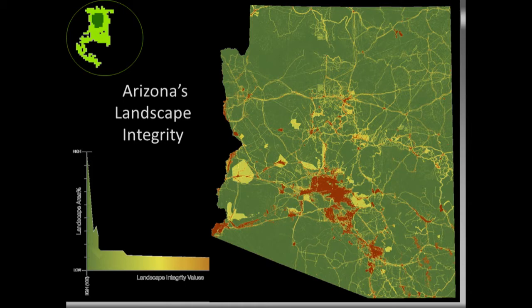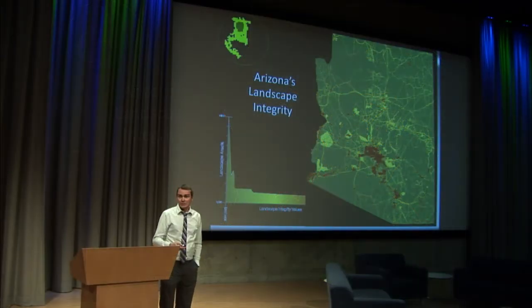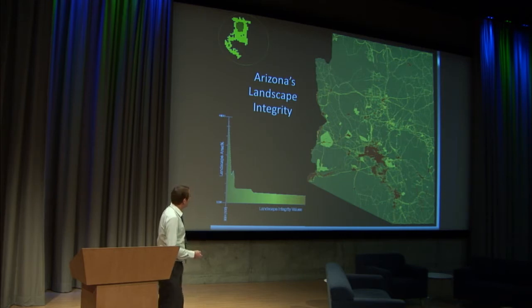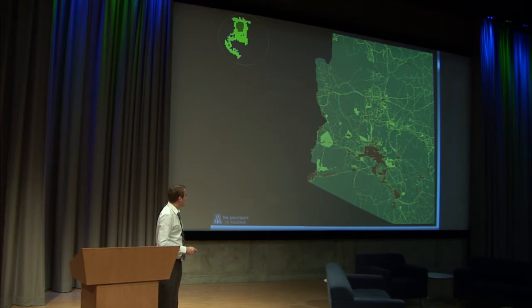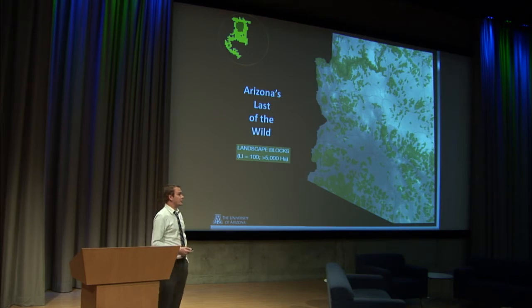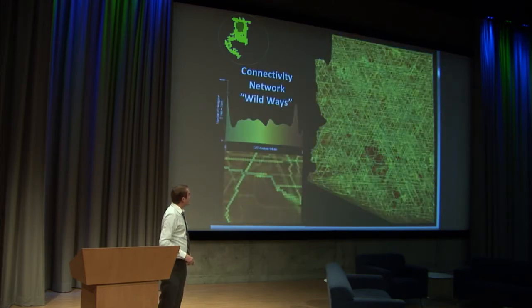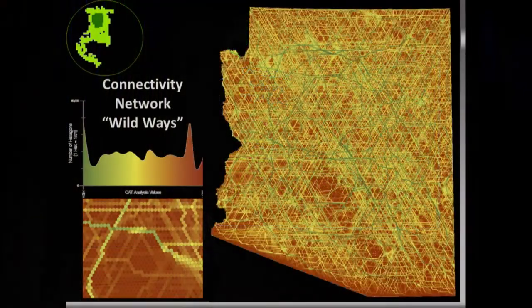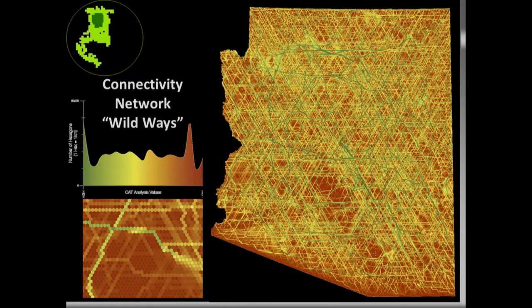This is some work recently completed in collaboration with the Arizona Department of Game and Fish, where we were tasked to model Arizona's naturalness — i.e., the landscape integrity of the state of Arizona. This is a summation of our human footprint: all the built infrastructure and the projected zones of influence associated with that infrastructure, to get an understanding of where the last remaining natural locations throughout the state are.